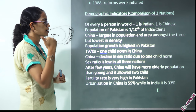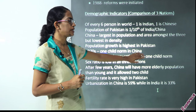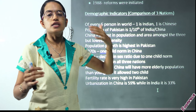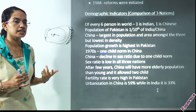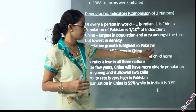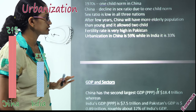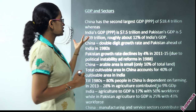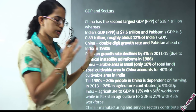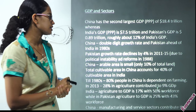Around the 1970s in China, a one-child policy was introduced. However, the sex ratio declined sharply, reaching the lowest level among the three nations. China feared that in coming years, the elderly population would surge, so they relaxed the one-child policy and shifted to a two-child policy. The fertility rate is highest in Pakistan. Urbanization is highest in China at 59%, followed by India at around 33%. China moved towards industrialization and manufacturing, while India and Pakistan directly jumped to the service sector.